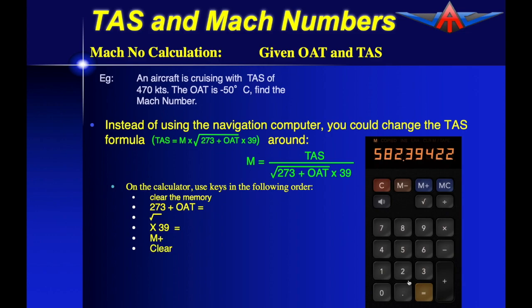And we now need to divide the TAS of 470 by that value. So 470 divided by the memory and then press the equals button to complete the calculation. And we have a value of 0.801. We can round that to Mach 0.81 which is the same value as you obtained on your navigation computer.